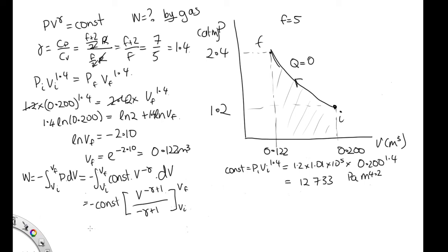So now let's substitute everything in here. Let's get rid of that negative sign, so we can make that positive. This is positive, and that's negative then. So we've got 12,733 times V final, which is 0.122 to the 1 minus 1.4, so that's to the minus 0.4 over 1.4 minus 1, so over 0.4. And then we substitute in the initial volume, so that's 0.200 to the minus 0.4 over 0.4.